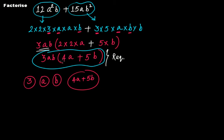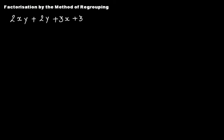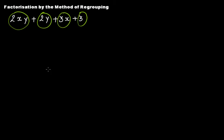So in that case, we had common factors. But what if you don't have common factors, like in this problem? In this problem, we have four terms — first term, second term, third term, and fourth term. In all these four terms, we don't have a common factor. So how to do this?